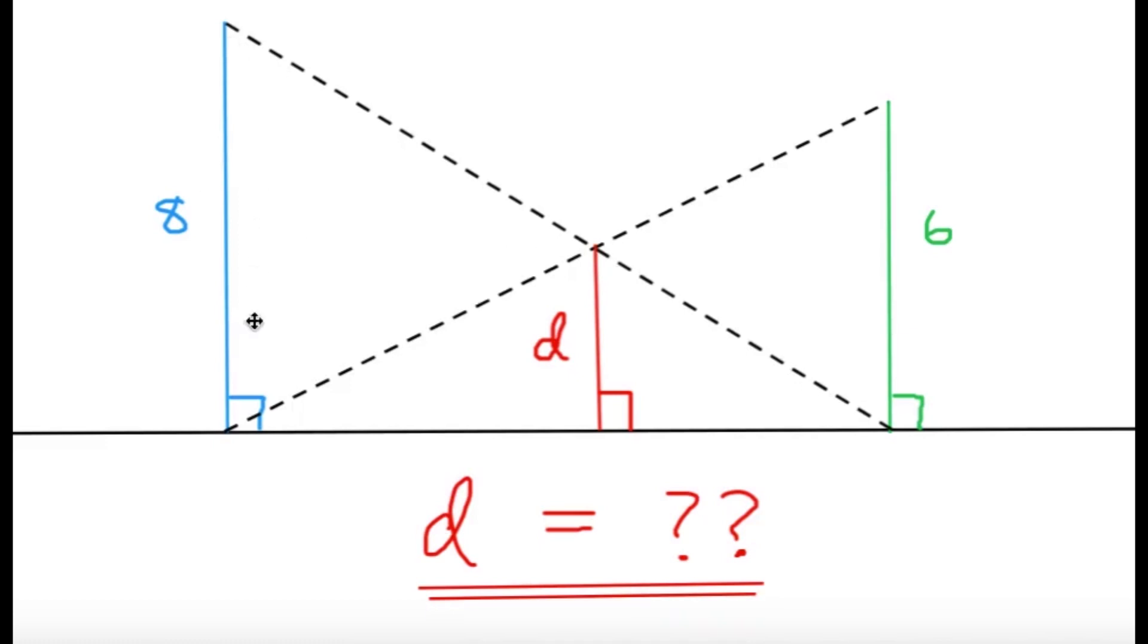Given this figure, we have the blue segment and the green segment, both perpendicular to the same line, and we have two dashed lines here. Then we draw from the intersection point a perpendicular to the same line, and we want to find the length of d. So what is the value of d?